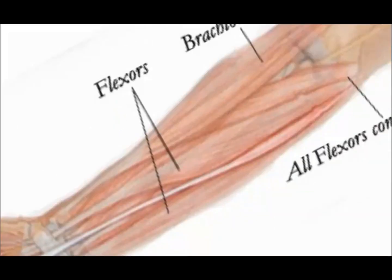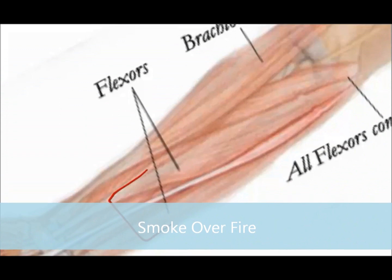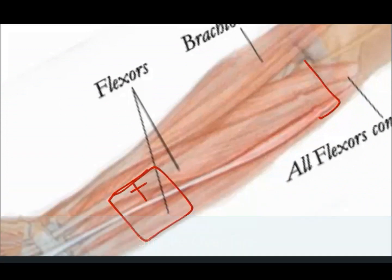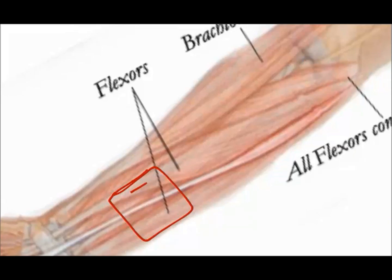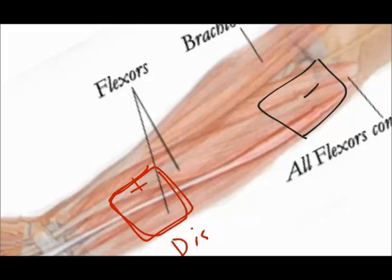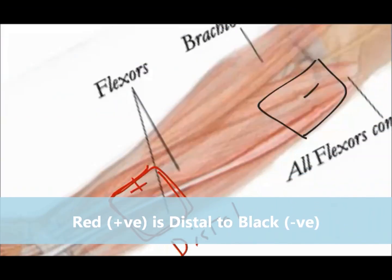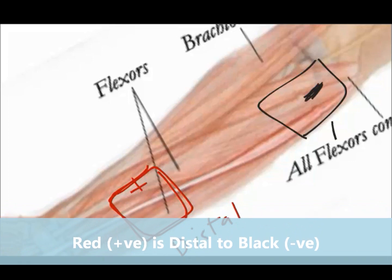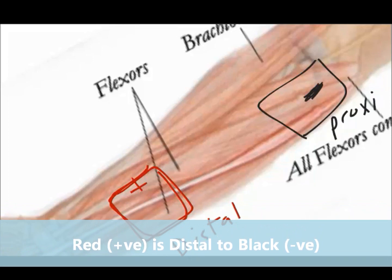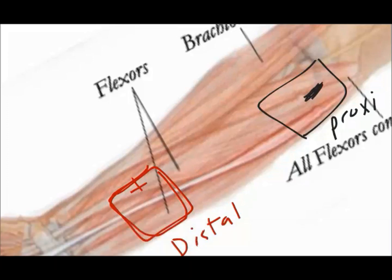The rule of thumb you need to know about placing electrodes is called 'smoke over fire.' The red electrode is positively charged, and the black electrode is negatively charged. The rule is: the red ones go distal — in this picture, closer to the hand — and the negative ones go proximal, closer to the elbow. Smoke, which is black or gray, goes over fire, which is red.